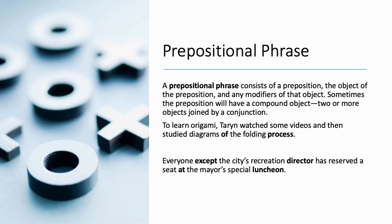A prepositional phrase consists of a preposition, the object of the preposition, and any modifiers of that object. Sometimes the preposition will have a compound object — this is going to be a bit more complicated — which means two or more objects joined by a conjunction.